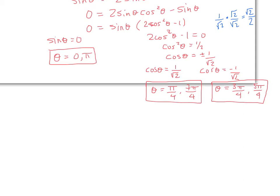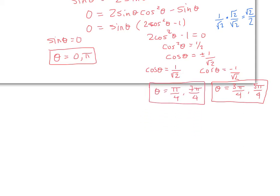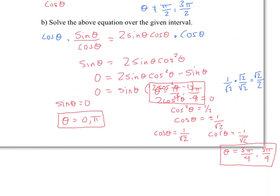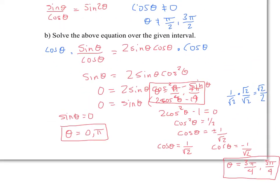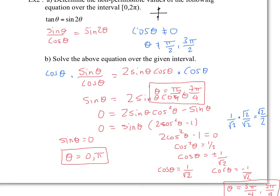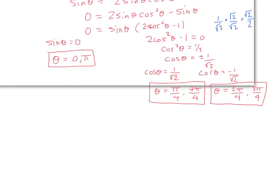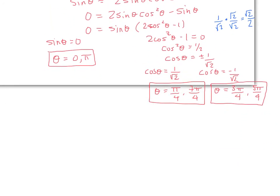So going back, notice that none of these solutions are non-permissible values. So we can accept all these different solutions presented here. These are all the solutions to that equation.